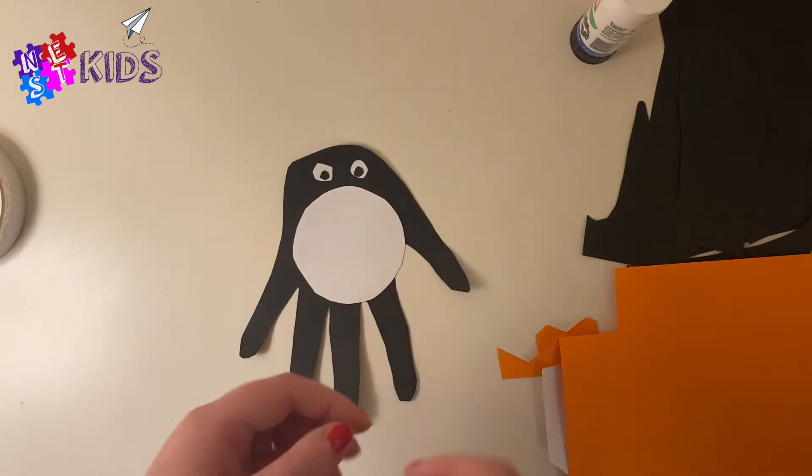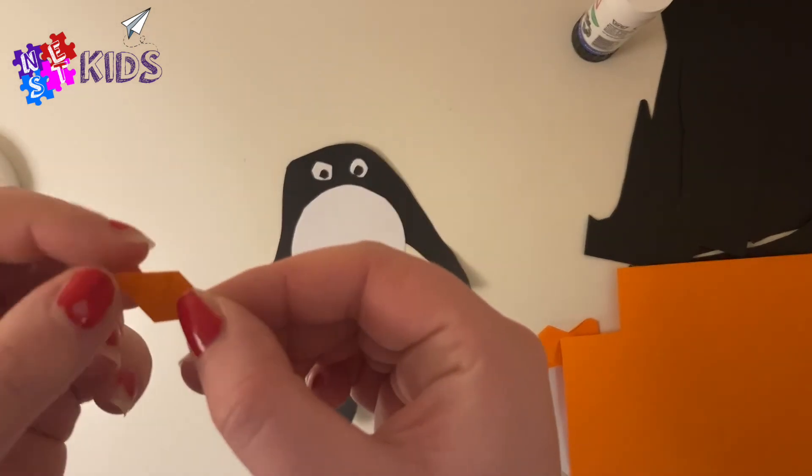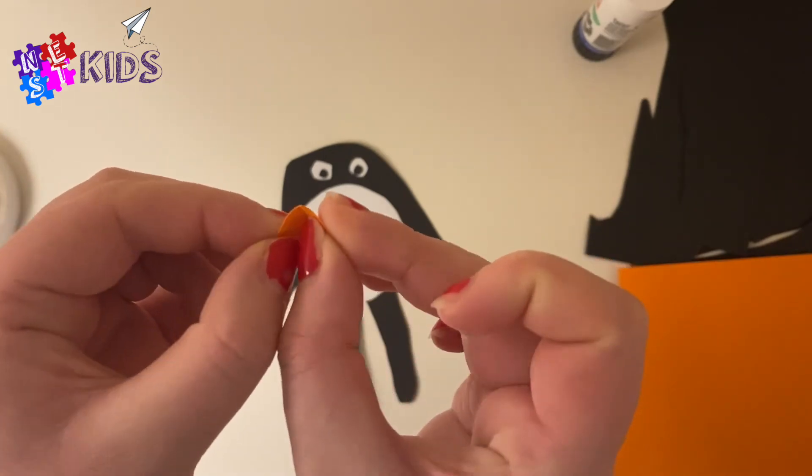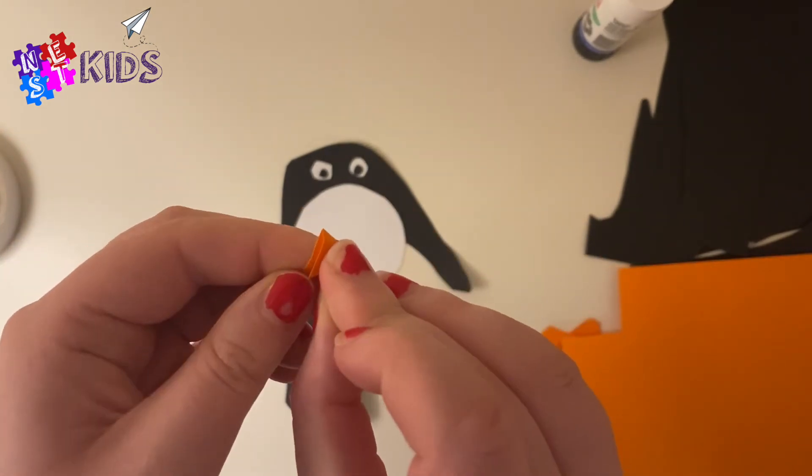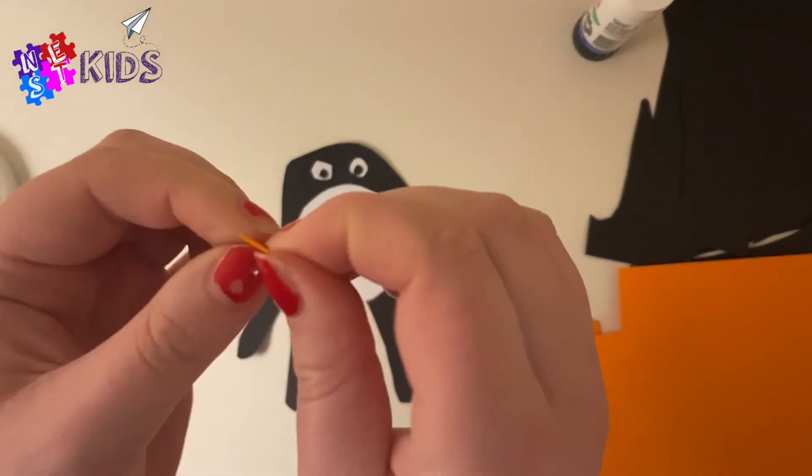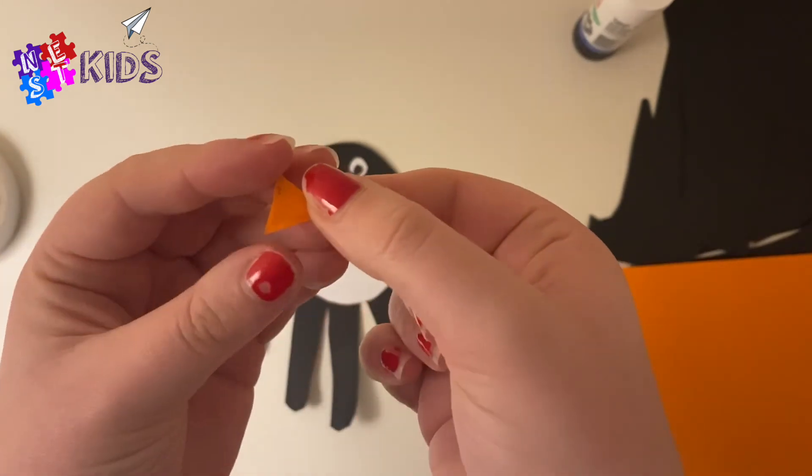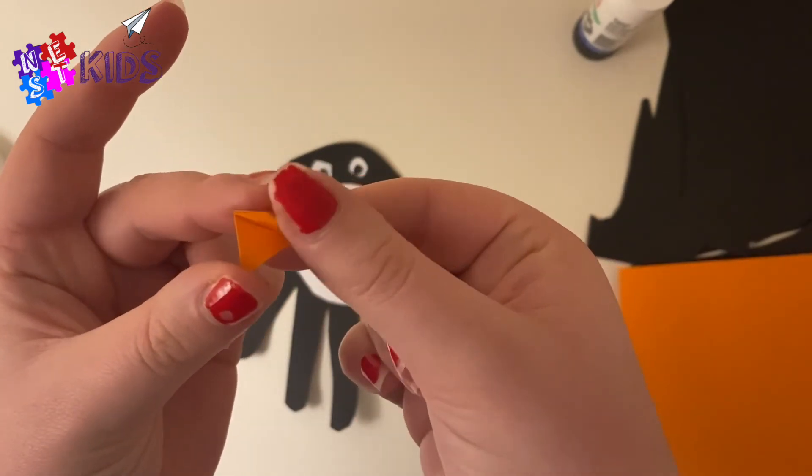There's the penguin. What I want you to do is along that line you did along the middle, fold your beak in half, fold that diamond in half. Then one side is going to be sticky. Don't make both sides sticky.